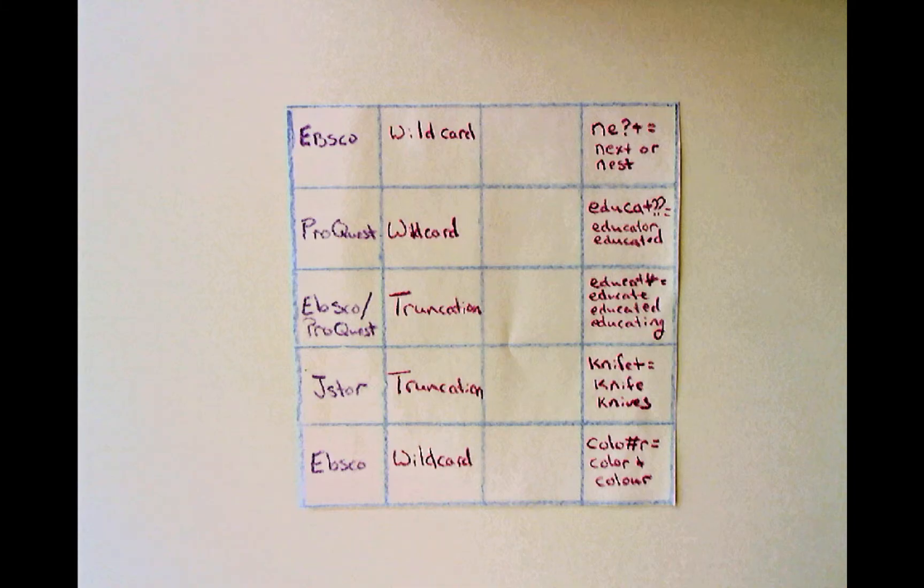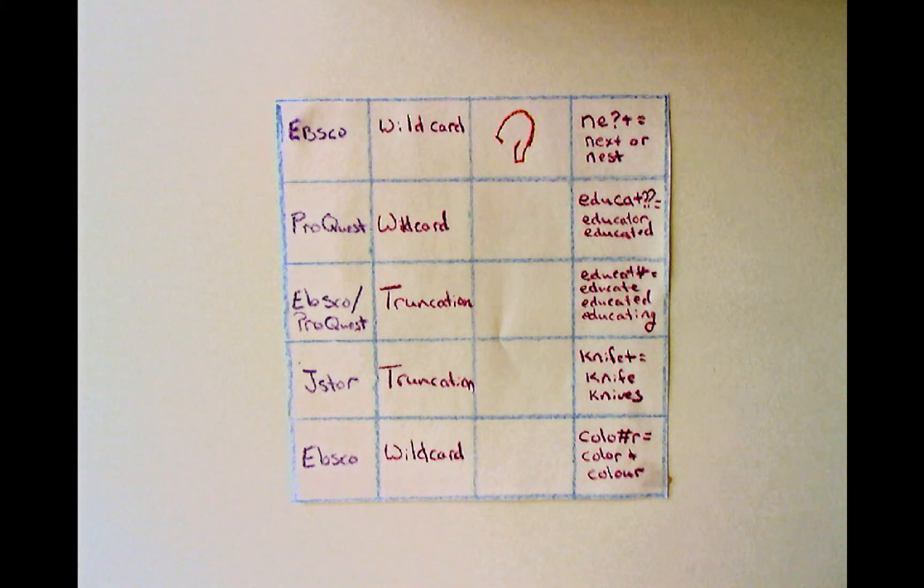Truncation is tricky because there are four types, subtypes within types, and itsy-bitsy differences between systems on how they perform truncation. Typically truncation uses a symbol at the beginning and or in the middle of a search term and a number to indicate the number of truncated characters.